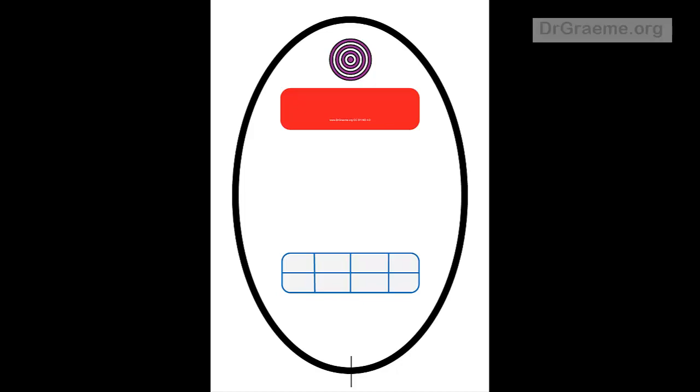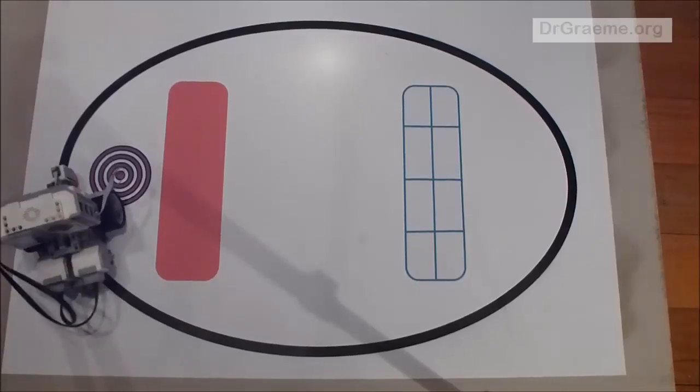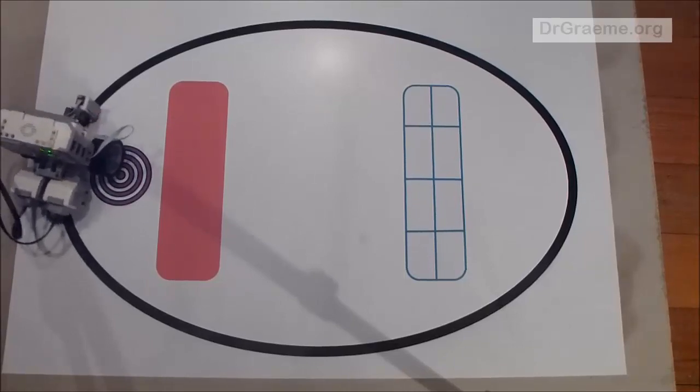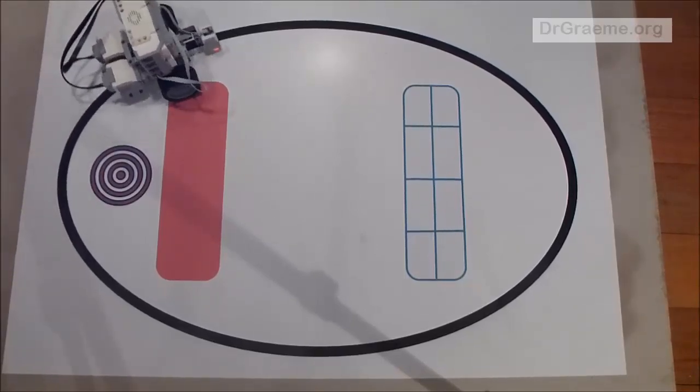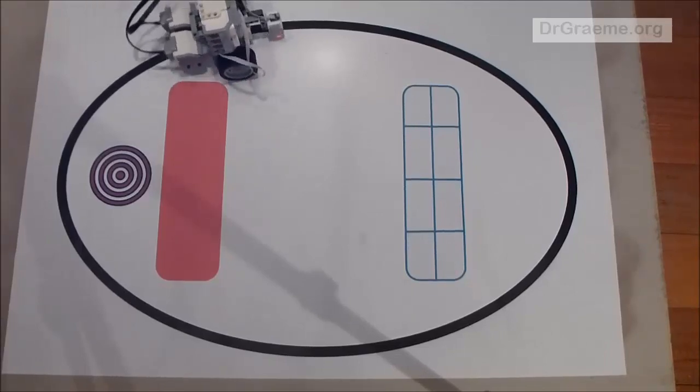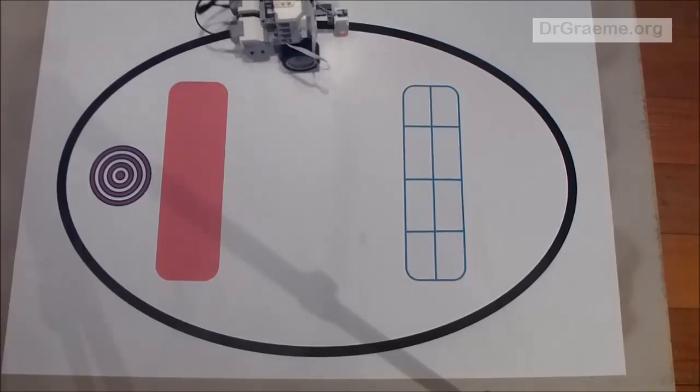One way of getting that is to print out this standard form from our website. You can see that the robot is following the gentle curve which is an ellipse.